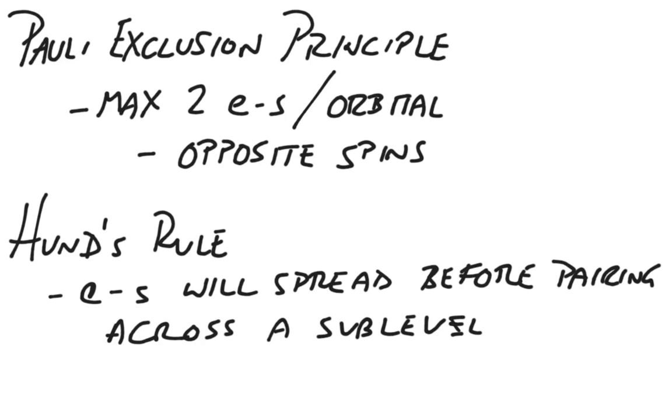The third rule is Hund's Rule. It says that electrons will spread out across the sublevel before they pair up. I like to create an analogy of maybe a five-member family moving into a three-bedroom house. The parents will automatically take one room, leaving you with two bedrooms for four siblings. Initially you'll spread out across those rooms until there's no more rooms for the siblings and then the siblings will be forced to pair up.